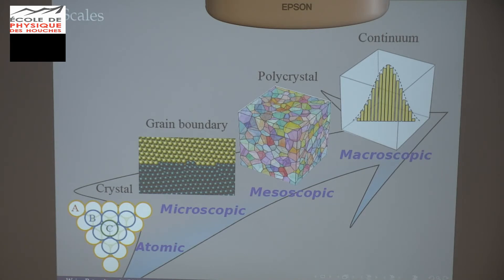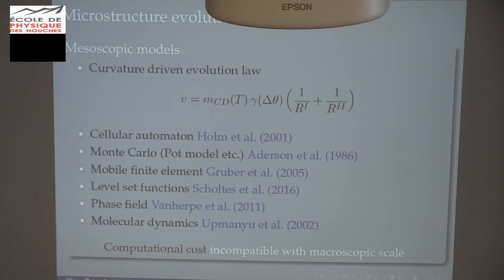Today I'm going to show you what I've done for the first three scales — I won't detail the macroscopic model because it's not completely finished. I'm going to show you the first upscaling method. The idea is that I only consider curvature-driven grain growth, written here with the surface energy of the grain boundary and the radius of curvature. Since this speed deals with the grain boundary, most approaches describe the grain boundary curvature in detail.